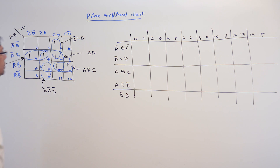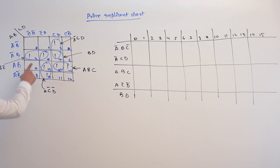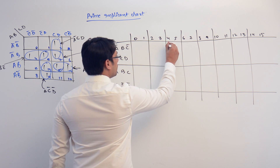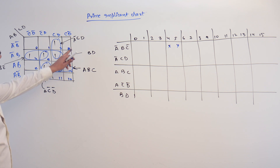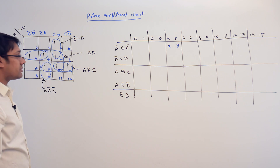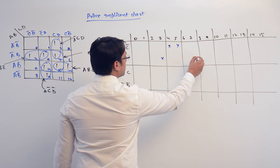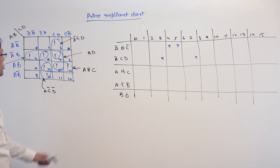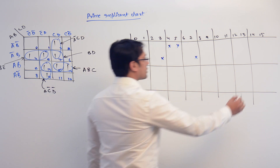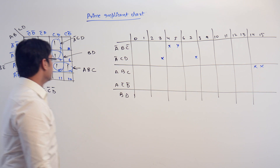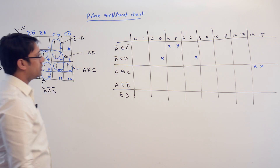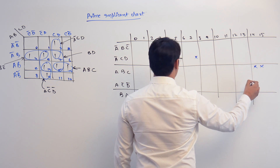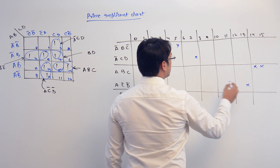The first subcube is A complement, B, C complement — it is covering the terms 4 and 5. If you take the subcube A complement, C, D, it is covering the terms 3 and 7. This subcube A, B, C is covering the terms 14 and 15. And A, C complement, D complement is covering the terms 13 and 9.